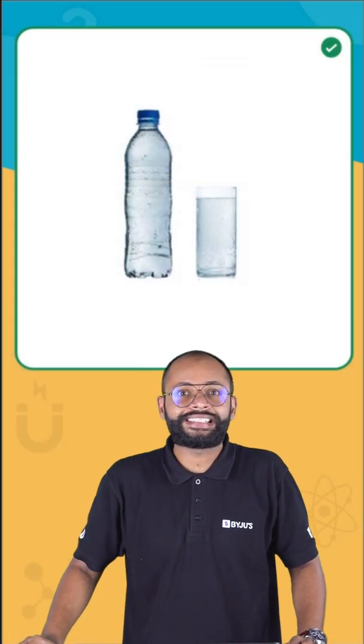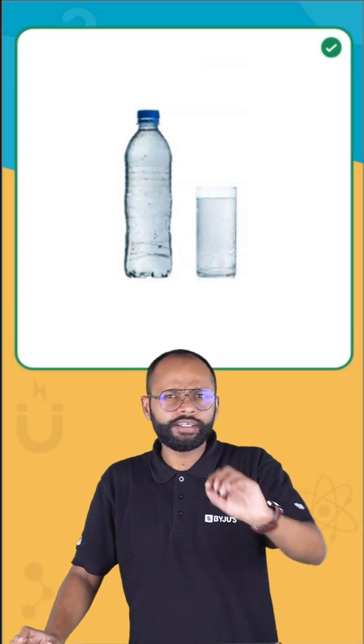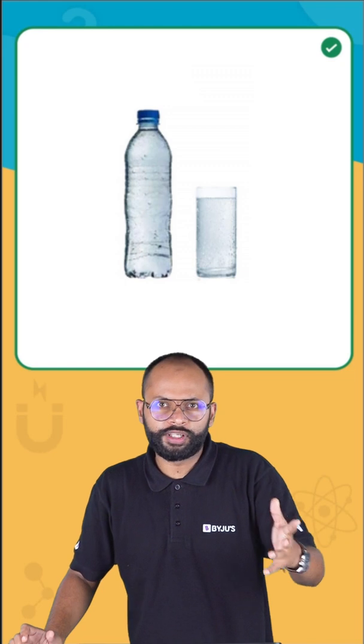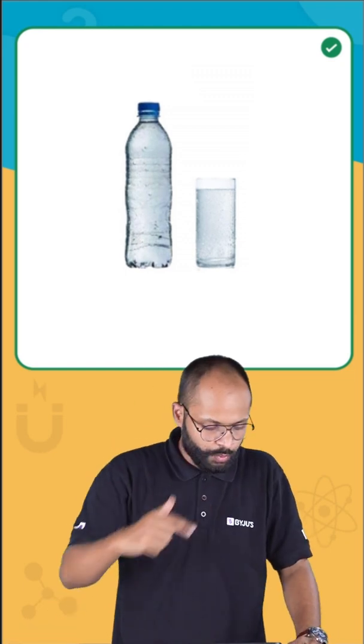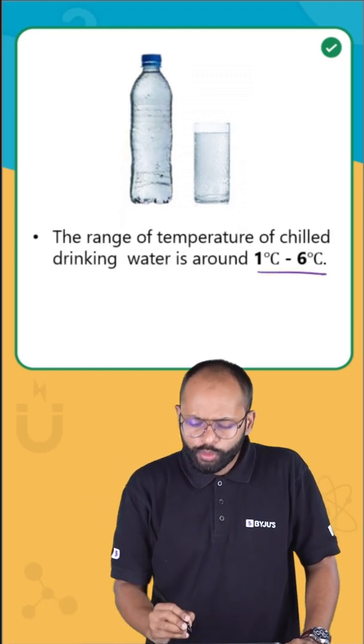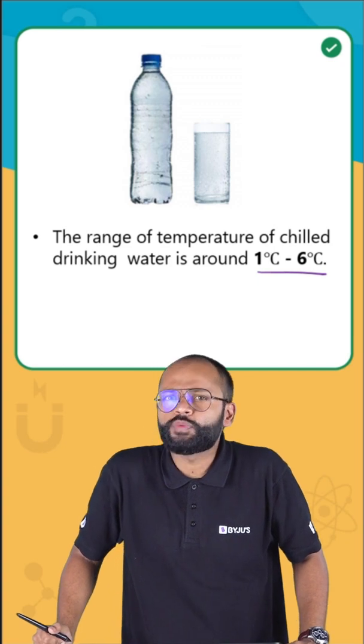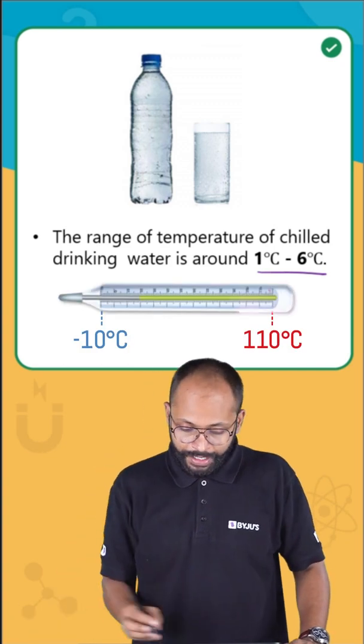One thing is clear: the temperature cannot be below zero, because then it'll be ice. That's why the temperature is around 1 to 6 degrees Celsius, which means the answer is laboratory thermometer.